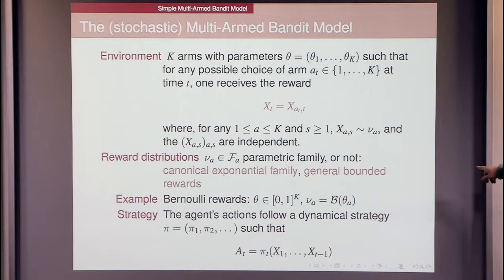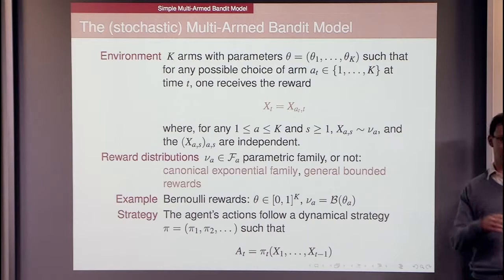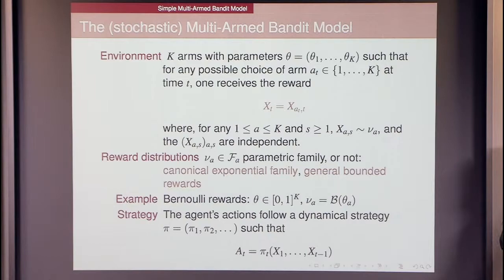Here we will assume that each reward, each arm, is a probability distribution belonging to some family, parametric or not. If you're not familiar with this model, you can just assume that this is a binary reward. If you choose some machine, either you win or you don't win. What you can do is only choose your machine according to your past observations—that is, according to the arms you have chosen before and the rewards you have had on these arms.